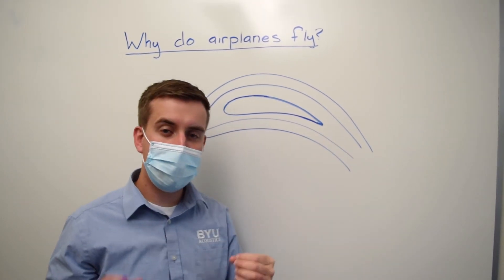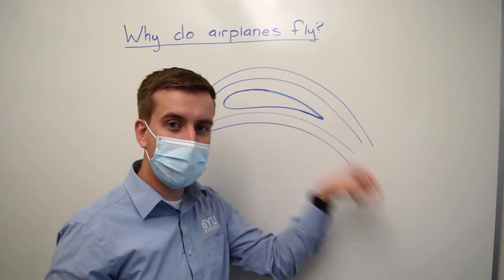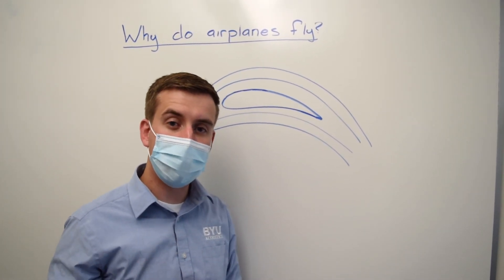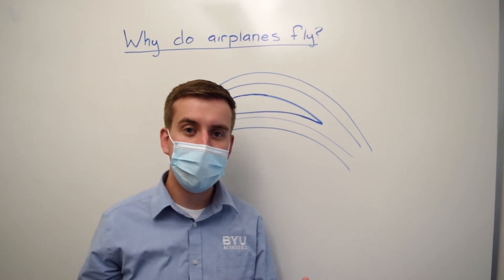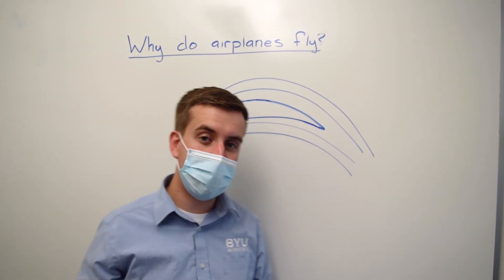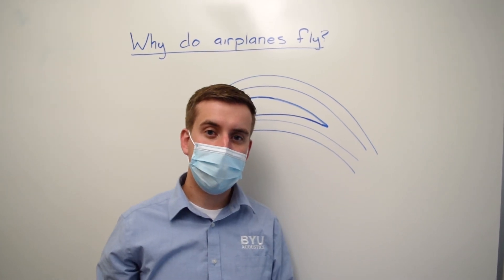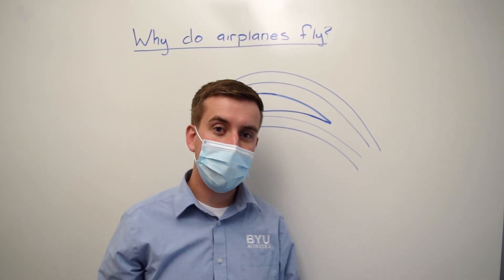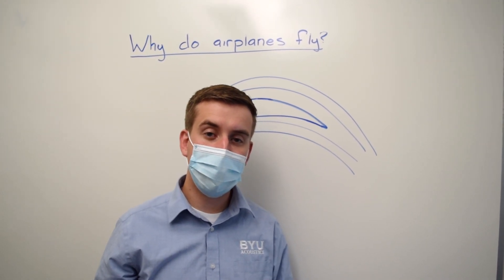The air gets thrown downwards because of a lot of different factors that come in with the airflow. And when the air gets thrown downwards, we learn from Newton's third law — the equal and opposite reaction — that if we throw the air down using our wing, the air will in turn push us up. Lift is actually generated by throwing air down, or diverting it downwards. In all airplanes that fly, if you could actually see the air, you would see that the air gets thrown downwards, and that throwing the air downwards is what gives us our lift.